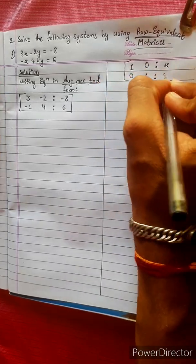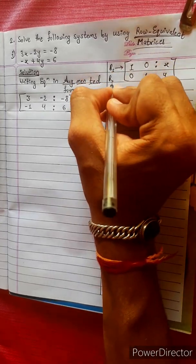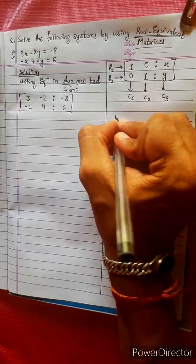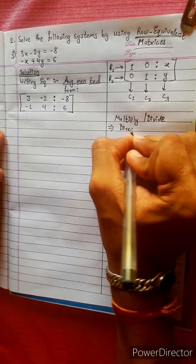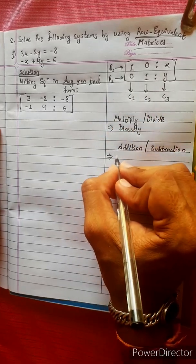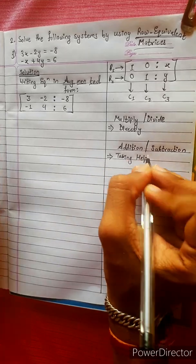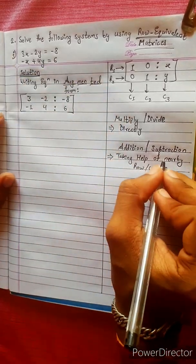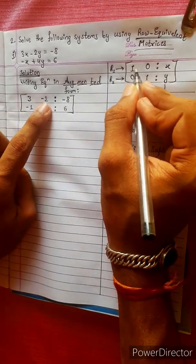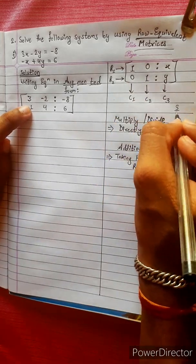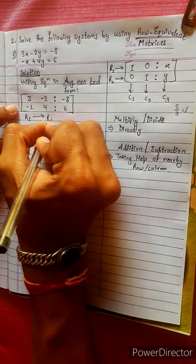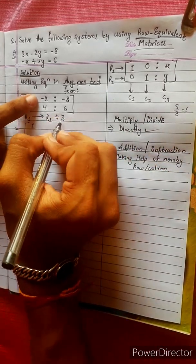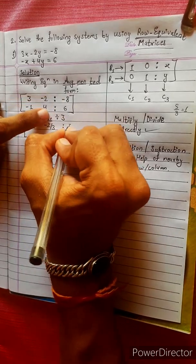When you see the last one, that is the value of x. This is the value of R1, this is the second row R2, this is the first column, second column, third column. There is another rule — multiply and divide. Divide by 3. Divide by 3: 3 divided by 3 equals 1, minus 2 divided by 3 is minus 2 by 3, minus 8 divided by 3 is minus 8 by 3.